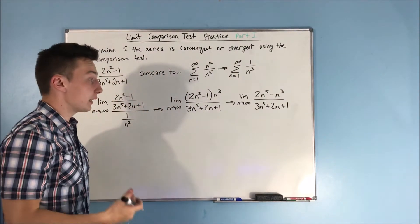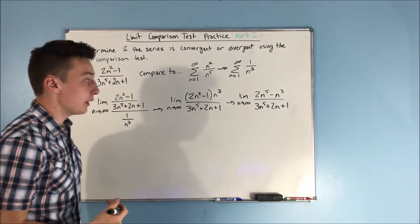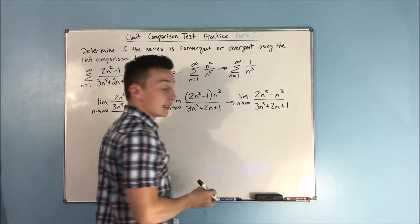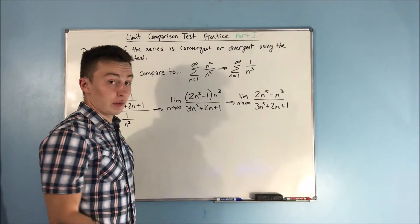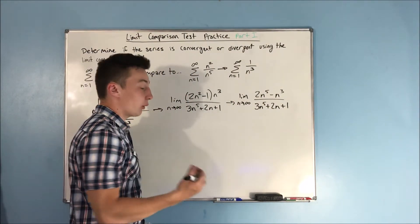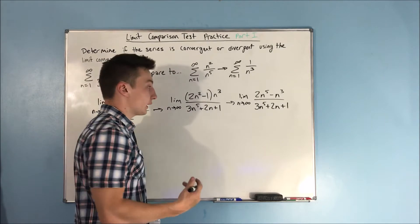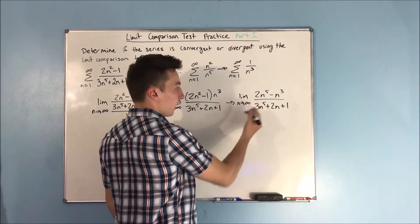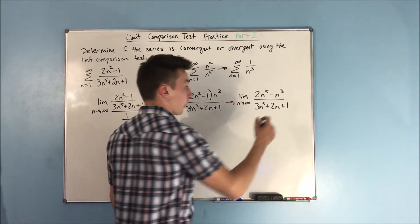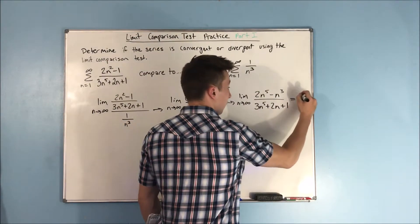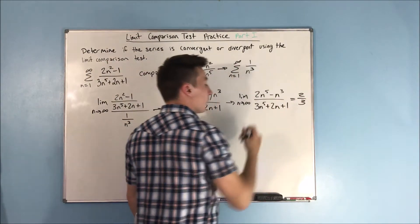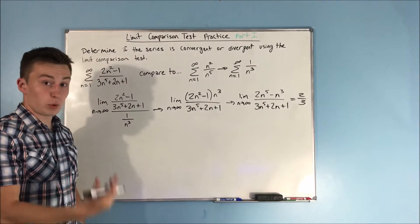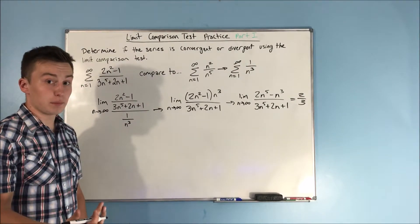That gives us the limit as n approaches infinity of two n to the fifth minus n to the third, over three n to the fifth plus two n plus one. You can divide everything by n to the fifth. If you feel good with limits, you can see that the answer is going to be two thirds — that's going to be the product of your limit. That is greater than zero and it's a finite number.